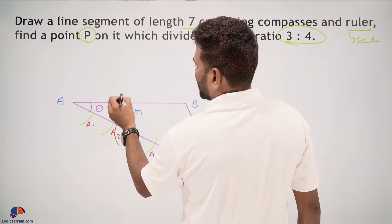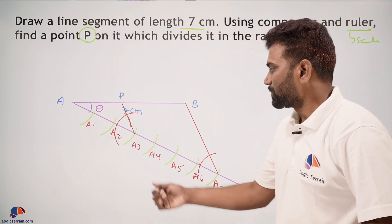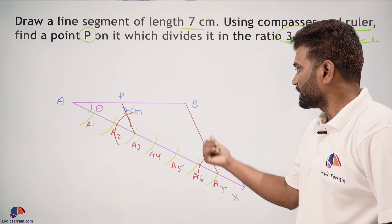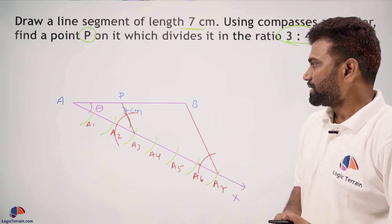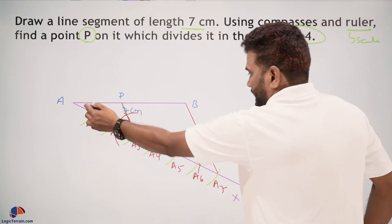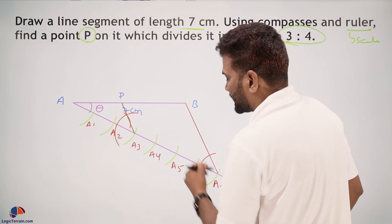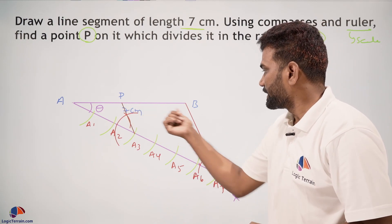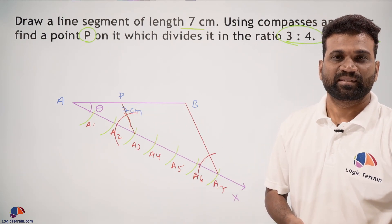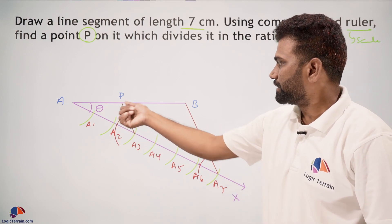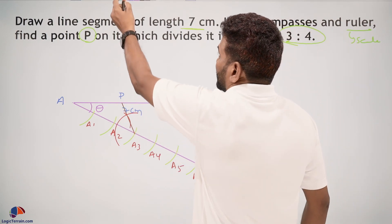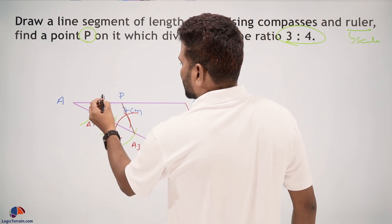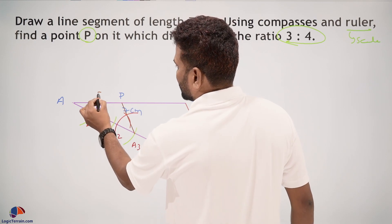Let's name this point P. Now A3P is parallel to A7B because AX is a ray and this angle equals this angle. These must be corresponding angles, so these two lines must be parallel. We got point P, and this point P divides line segment AB in 3:4 ratio.